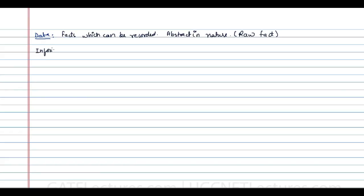When we say information, this information is created using data. Information can be defined as data with some added meaning — that means you should be able to derive some kind of meaning from the data. That is called information.